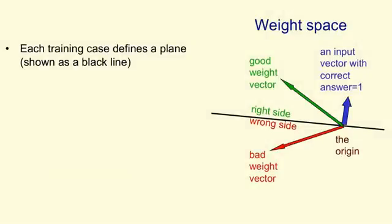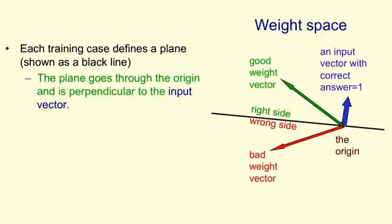Here's a picture of weight space. The training case, we're going to think of one training case for now, it defines a plane, which in this 2D picture is just the black line. The plane goes through the origin and it's perpendicular to the input vector for that training case, which here is shown as a blue vector. We're going to consider a training case in which the correct answer is 1, and for that kind of training case, the weight vector needs to be on the correct side of the hyperplane in order to get the answer right. It needs to be on the same side of the hyperplane as the direction in which the training vector points.